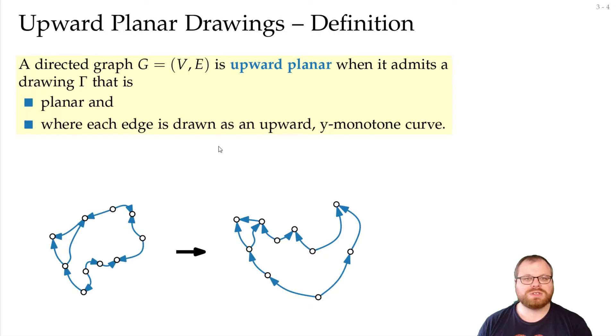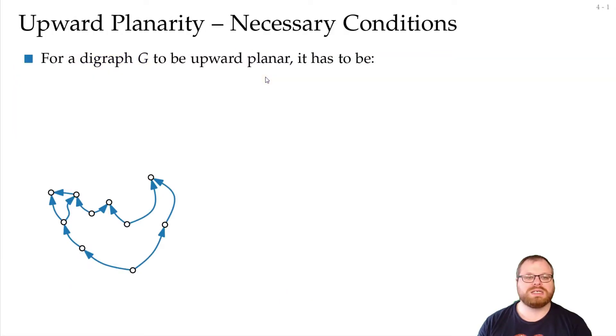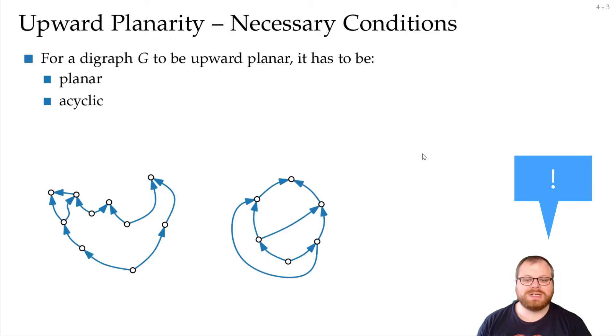We first want to find some necessary conditions that a graph must have, such that it has an upward planar drawing. Can you find some conditions? Well, first of all, of course, it has to be a planar graph. Second of all, if all the edges are supposed to be directed upwards, then we cannot have a directed cycle in it, so it has to be acyclic.